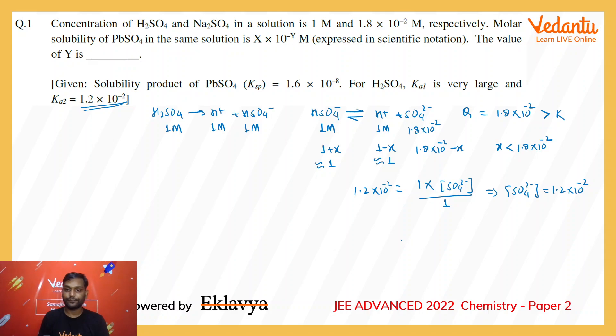Now in this solution we are dissolving PbSO4. When PbSO4 is dissolved, there will already be sulfate ion present in that, and that is equal to 1.2 × 10^-2 approximately.